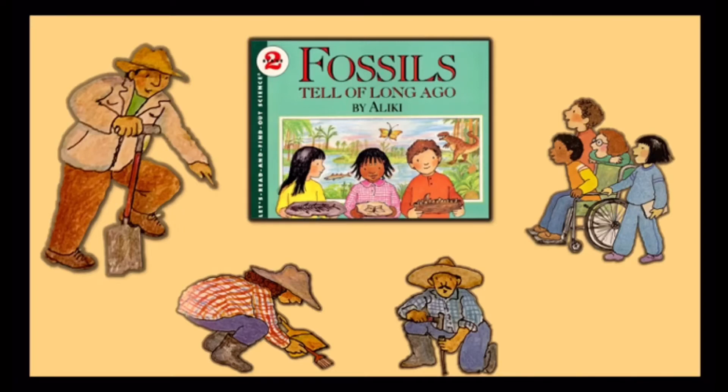As that happened, groundwater seeped through the changing layers of mud. Minerals were dissolved in the water. The water seeped into all the tiny holes in the fish bones. The minerals in the water were left behind in the fish bones. After a very long time the bones turned to stone. The fish was a fossil.